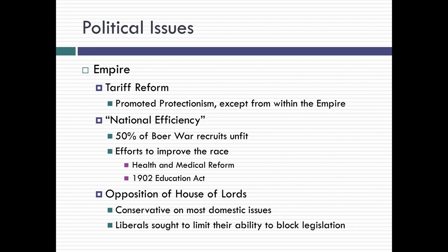One of the other important issues at the turn of the century was the House of Lords — sometimes called the peers, meaning the old nobility and ruling class. A lot of people were now not seeing a need for a nobility any longer. They still liked the monarch, but they weren't keen on the peerage, the lords of England. The lords were conservative on most domestic issues, which did not endear them to the average working class. And so liberals sought to limit the ability of the lords, who were often blocking legislation that would help the common people of England.